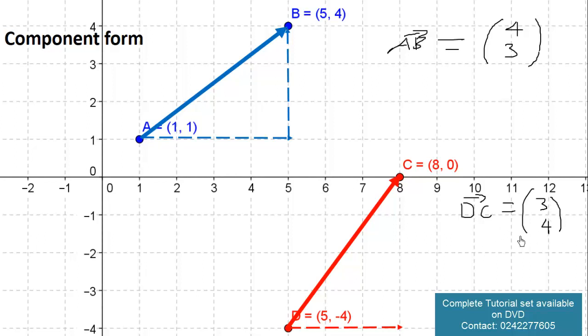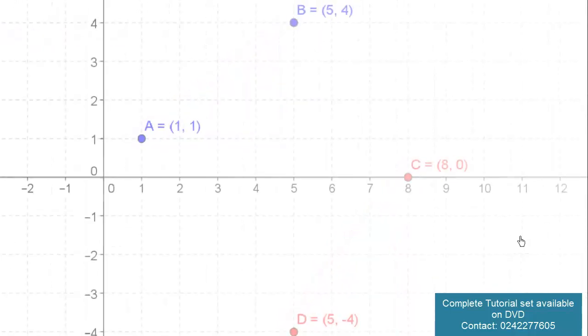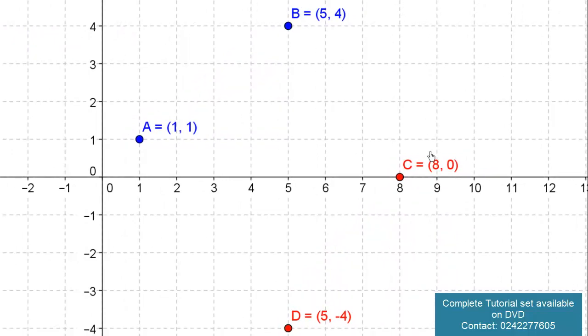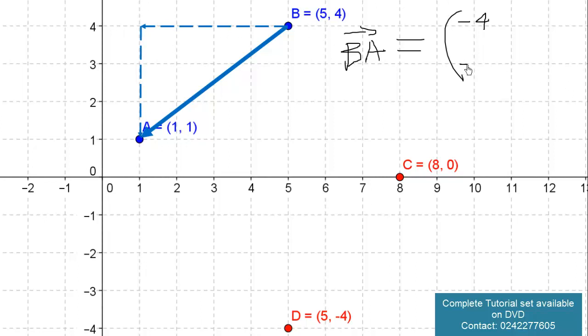So vector DC is equal to 3, 4. Then this time we are moving from B to A. So moving from B to A we moved 1, 2, 3, 4 units. Moving from B to A we have vector BA. The order is very important. Vector BA. Then we have 1, 2, 3, 4 and this is a movement in the negative X direction, so negative 4. Then we also have 1, 2, 3 in the negative Y direction.